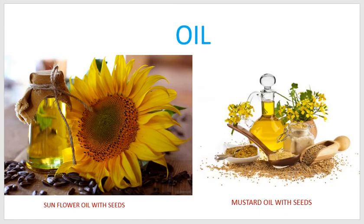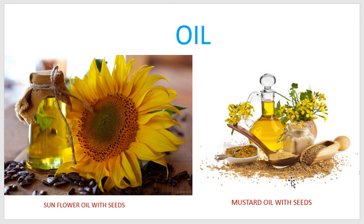Next we will see oil. How is oil made? Oil is made from seeds — and not only seeds, it is also made from coconut. There are many types of oils. Olives are a fruit, and using that they make oil. Here you can see sunflower and its seeds; using those seeds they prepare sunflower oil. Mustard oil is prepared using mustard seeds — if you haven't seen mustard seeds, ask your mum to show you; they will be in the kitchen. So we get oil also from seeds of plants.